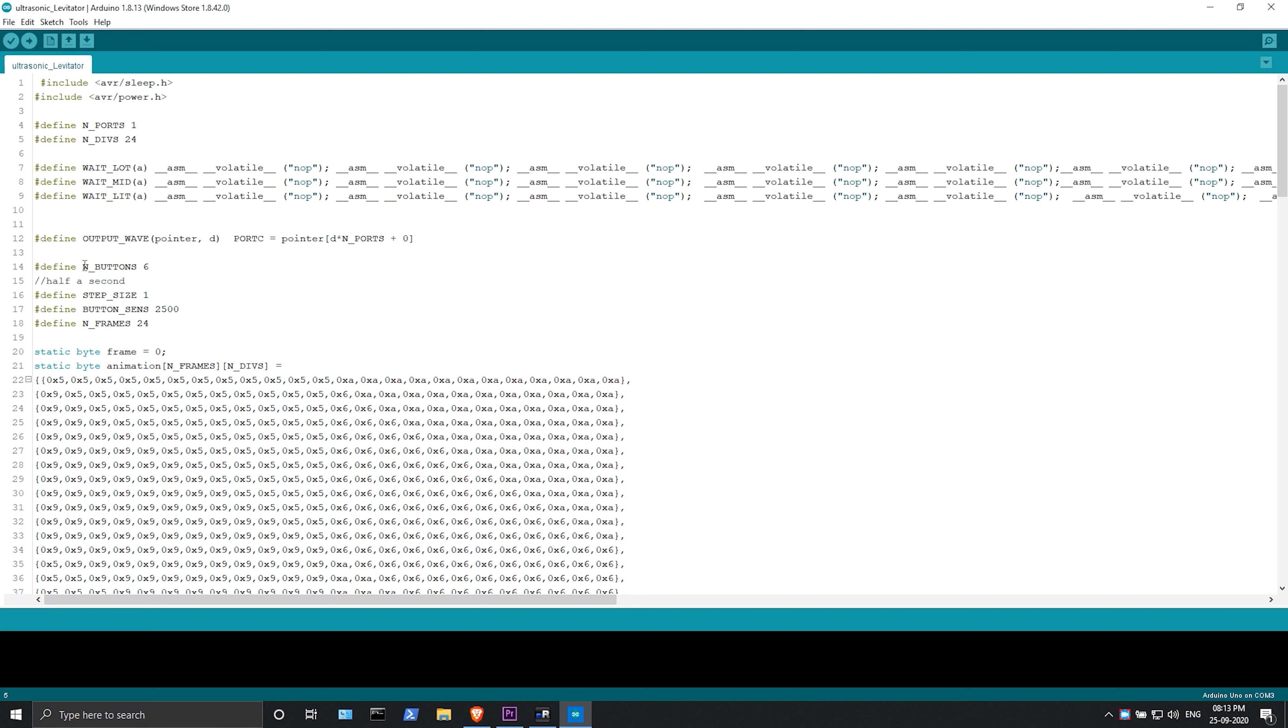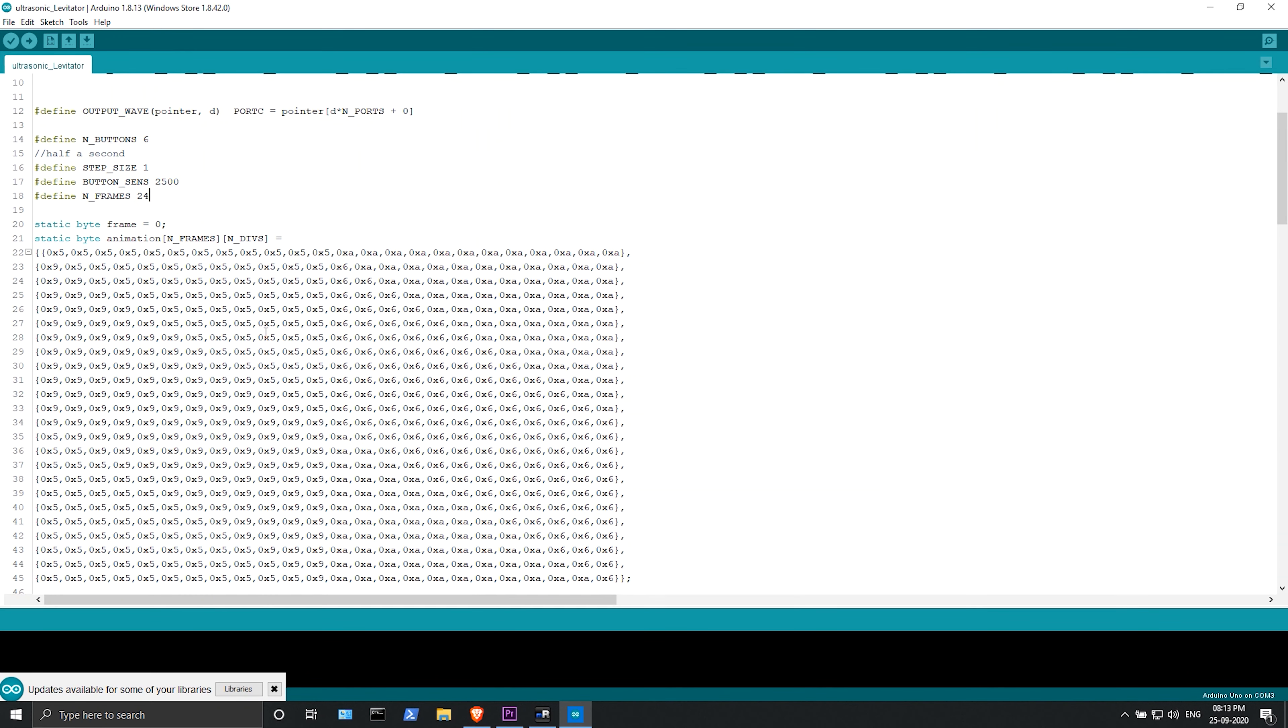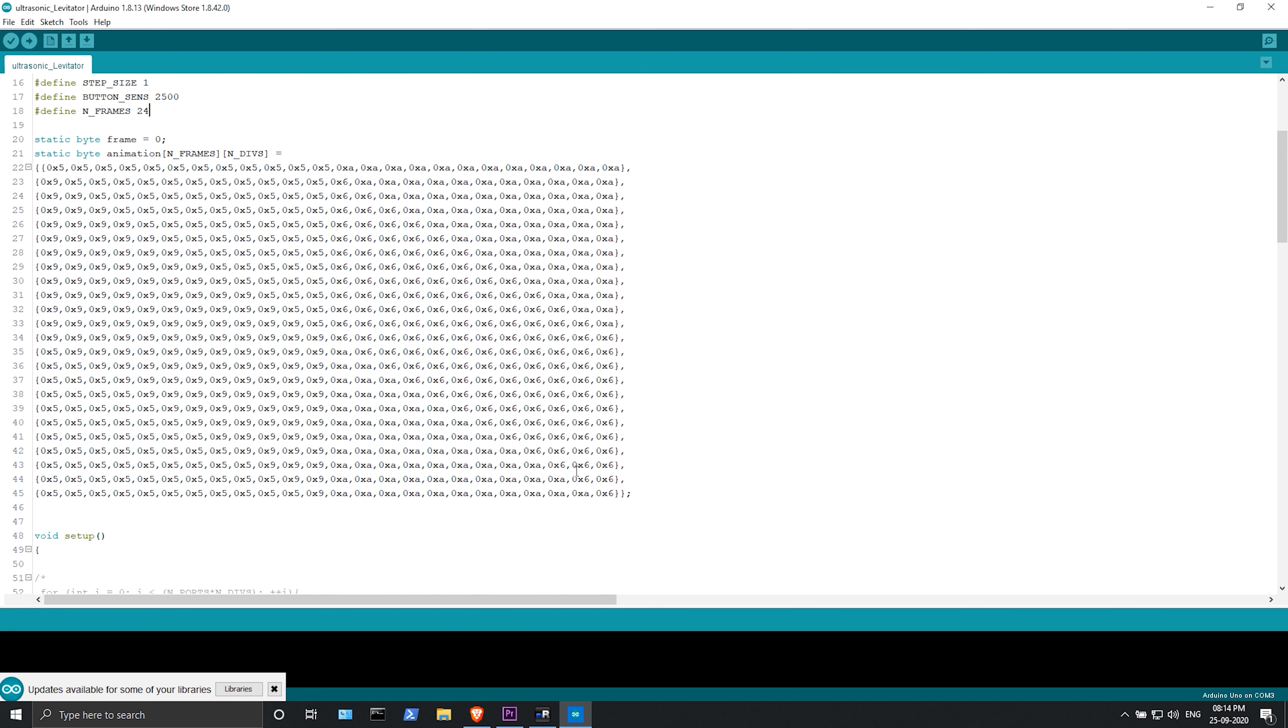Then I defined the output wave pointer D and the pointer end ports as 0. Then define the end button as 6, step size as 1, button sense as 250, and end frames as 24. After that we need to analyze the static bytes and redirect them to the frame and device ports.